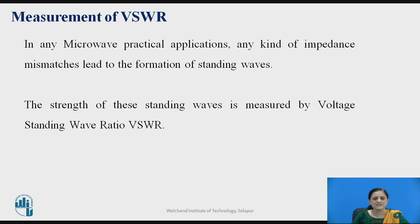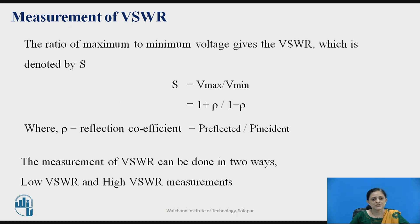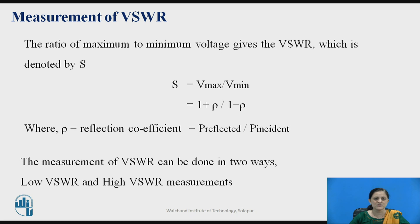If you take the ratio of maximum value of voltage to minimum value of voltage, you can find out the voltage standing wave ratio. The strength of these standing waves can be measured in terms of VSWR. The ratio of maximum to minimum voltage gives the VSWR, also denoted with S. S can be written as Vmax by Vmin. In terms of reflection coefficient, it can be written as 1 plus rho upon 1 minus rho, where rho is the reflection coefficient — it gives the value of how much of the wave is reflected back out of the total incident wave.